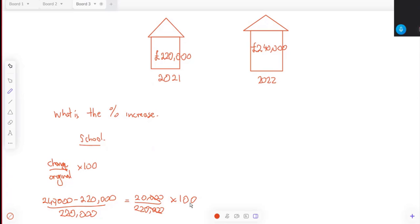You can write 20,000 over 220,000, but those three zeros can just cancel, so you can just write 20 divided by 220 and then times by 100. You should get 9.1. It's 9.09 but rounded, probably 9.1.